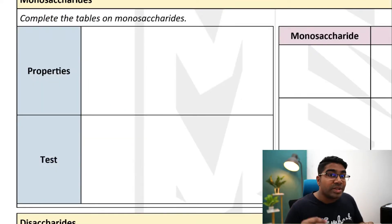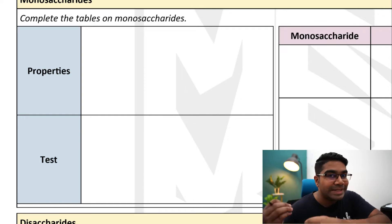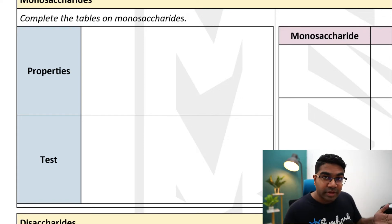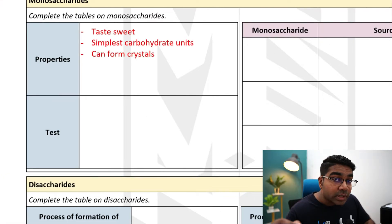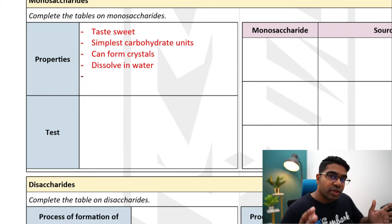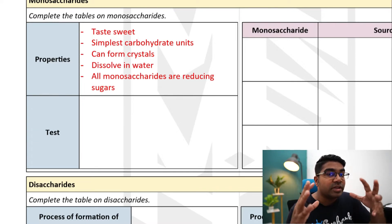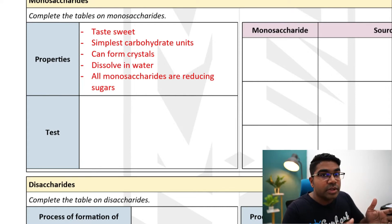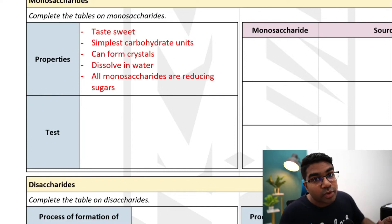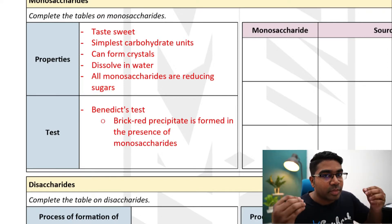When we say carbohydrate, we normally associate it with sugars and the sweet taste, and this is true for monosaccharides and disaccharides. The first property of monosaccharides is that they have a sweet taste. Monosaccharides are the simplest of all carbohydrates. They can form crystals that dissolve in water. All monosaccharides are reducing sugars, meaning they can reduce Benedict's solution in Benedict's test, producing a brick red precipitate. The blue Benedict's solution is reduced to a brick red precipitate, which is the positive result.